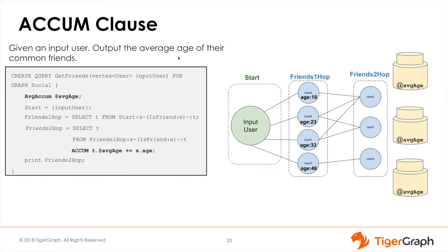Let's take a look at another example using a local accumulator. This time we're going to find the average age of a user's common friends, so we'll use the average accumulator as a local accumulator to take the average of all values being passed in. A local accumulator is defined using a single at symbol.